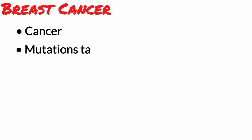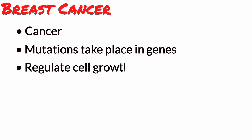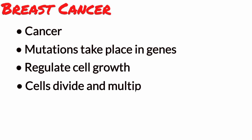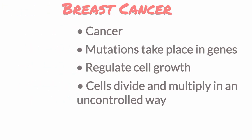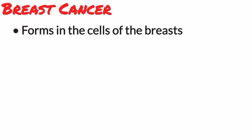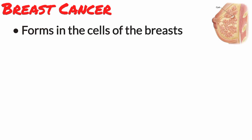Breast cancer occurs when changes called mutations take place in genes that regulate cell growth. The mutations let the cells divide and multiply in an uncontrolled way. Breast cancer is cancer that forms in the cells of the breast. Typically, the cancer forms in either the lobules or the ducts of the breast.